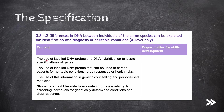We should know about the use of labeled DNA probes and DNA hybridization to locate specific alleles of genes. We should also know about the use of labeled DNA probes that can be used to screen patients for heritable conditions, drug responses, or health risks. Finally, we will cover the use of this information in genetic counseling and personalized medicine.